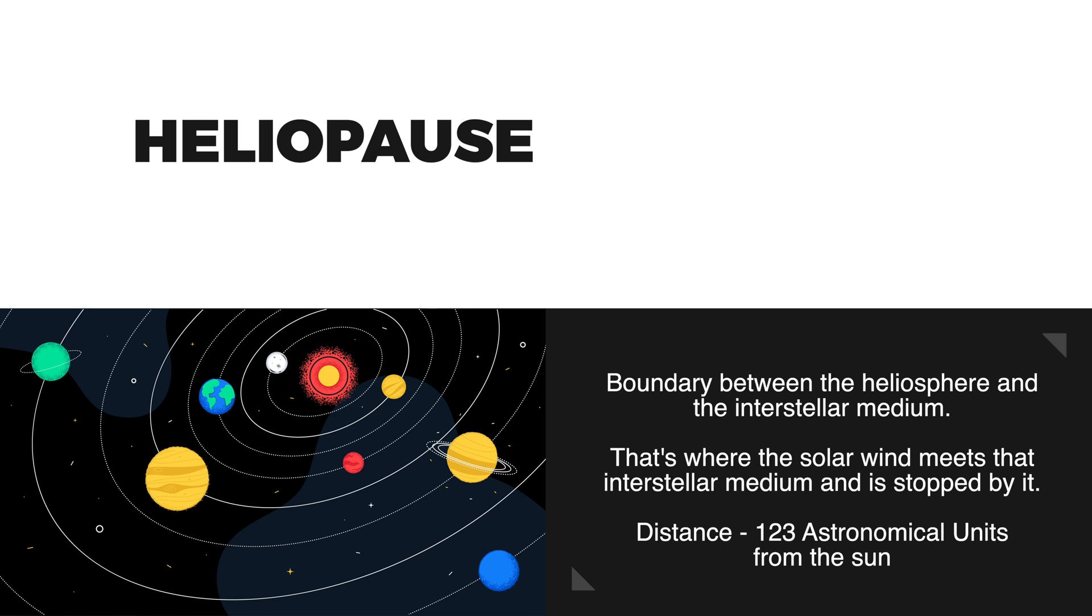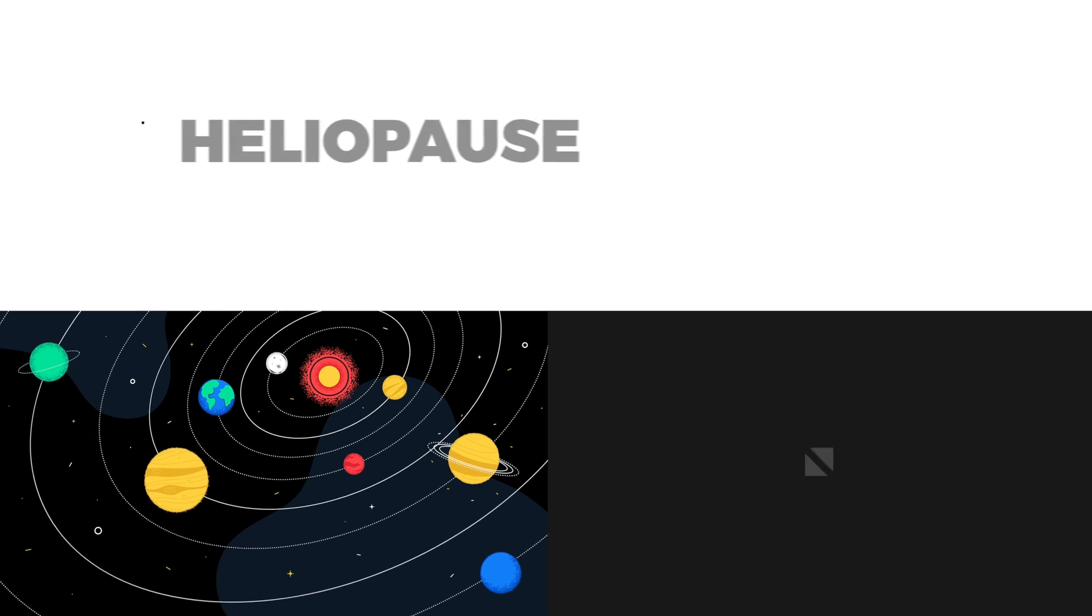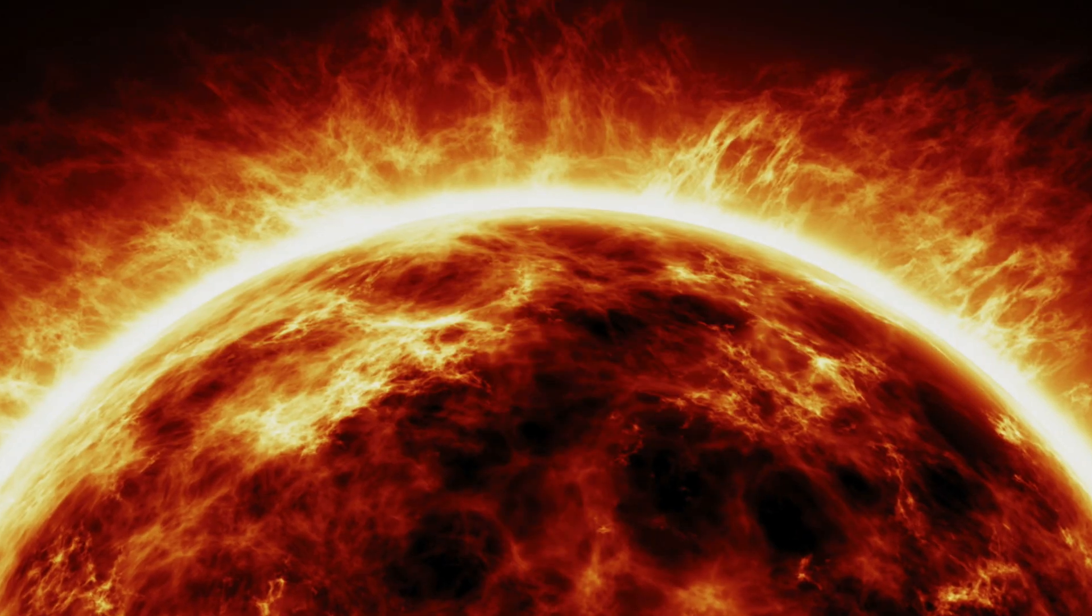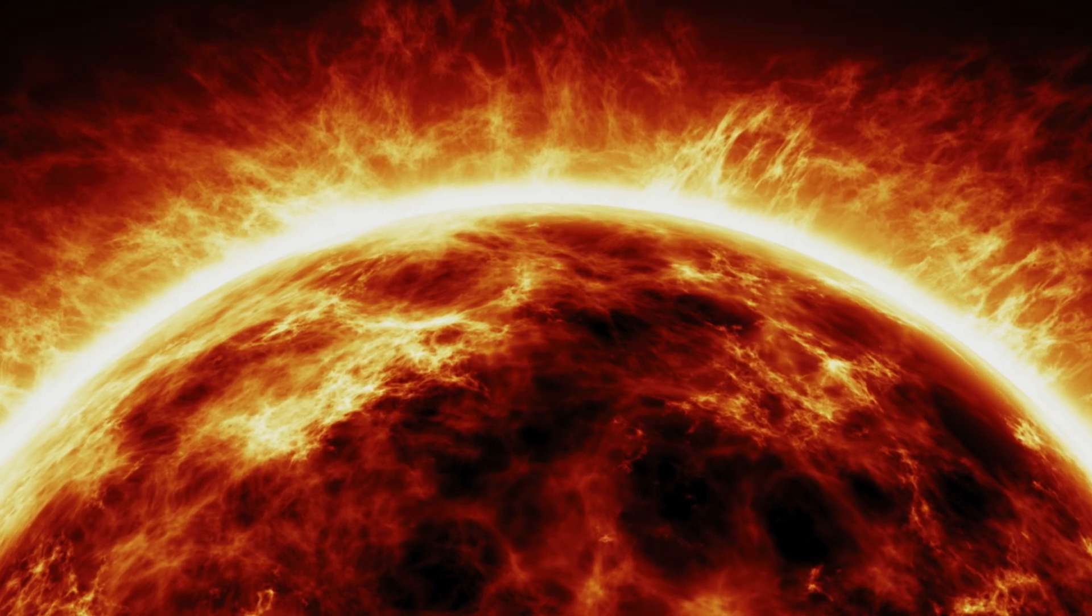The heliopause is located at a distance of about 123 astronomical units from the Sun and forms the outermost boundary of the Sun's sphere of influence.